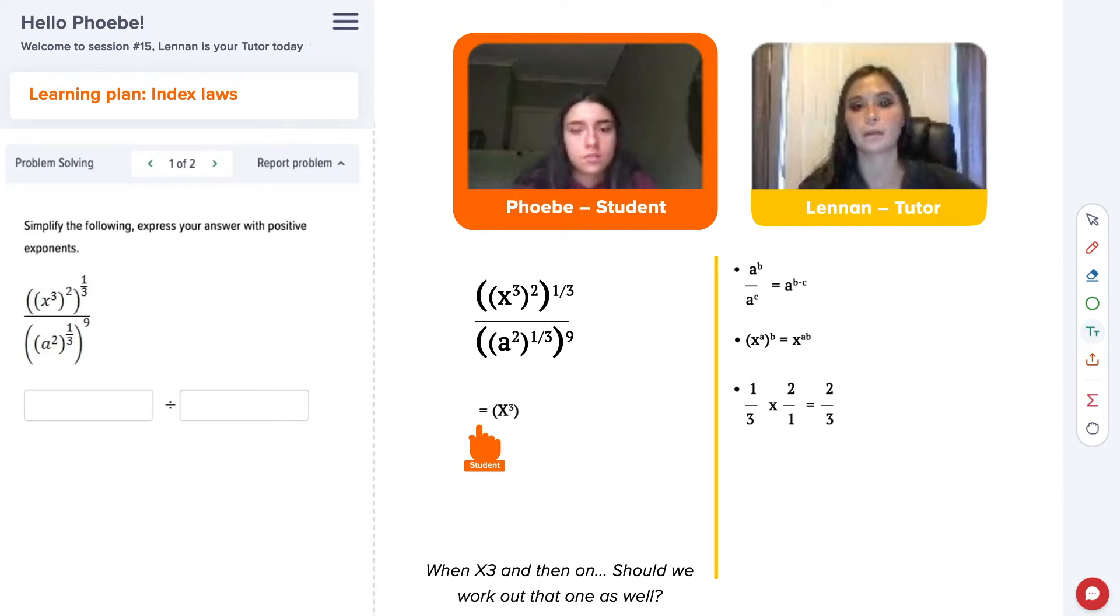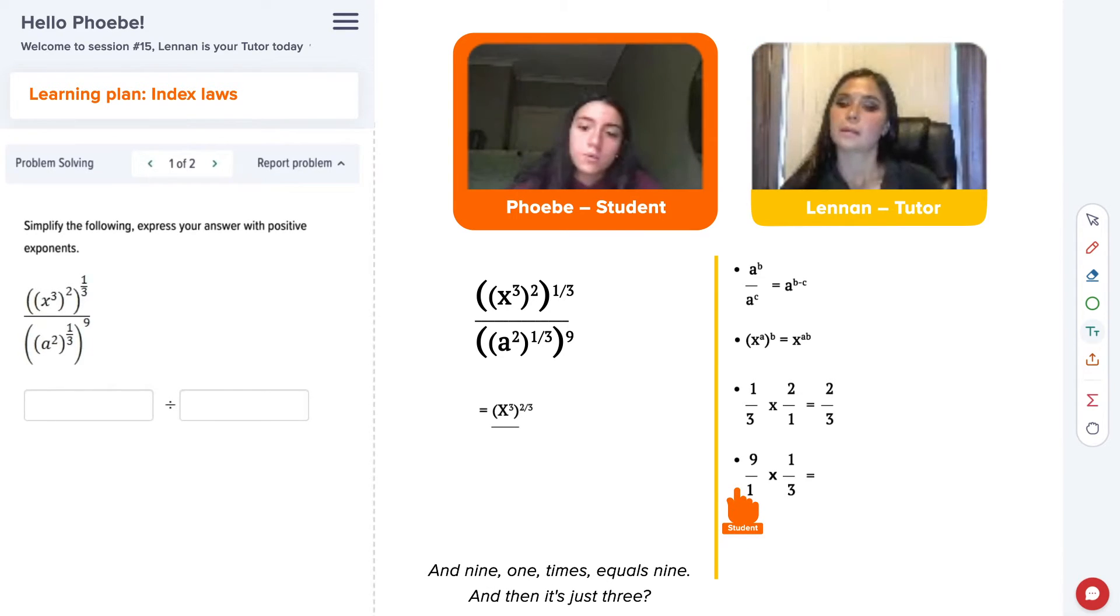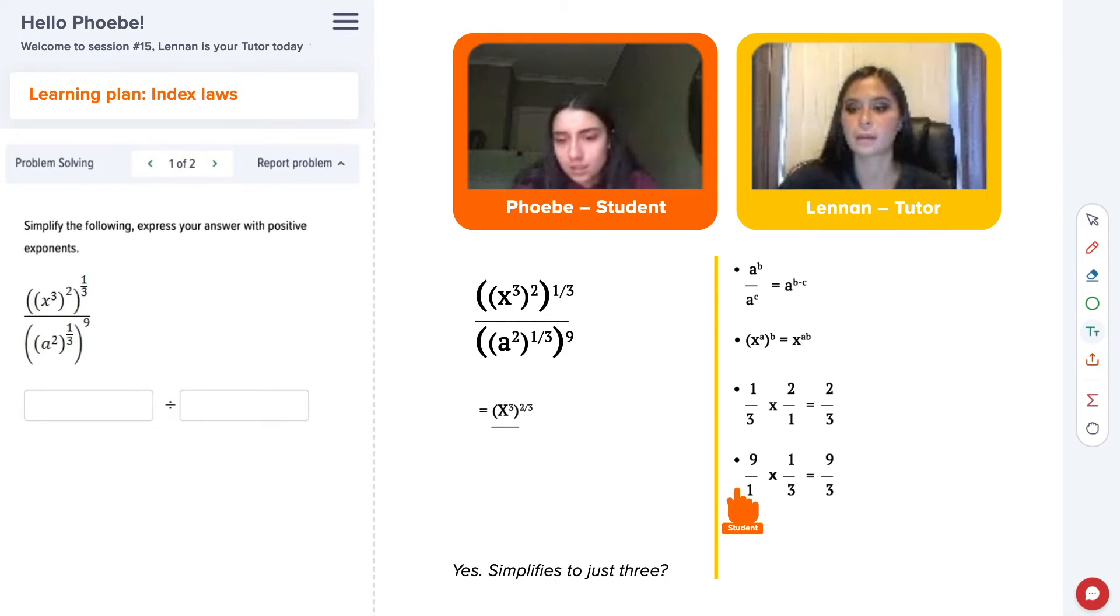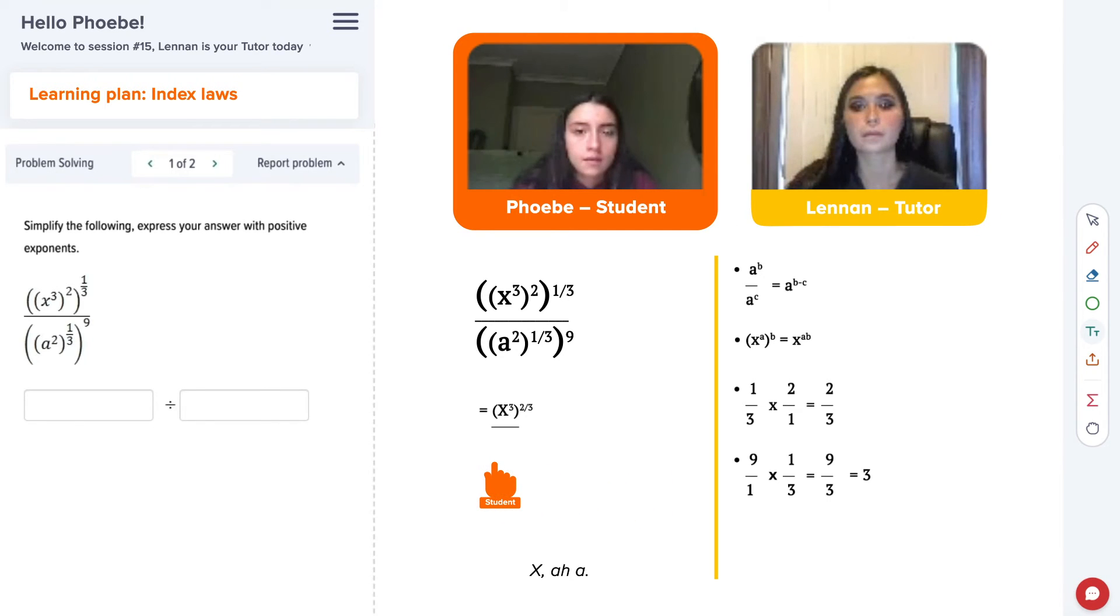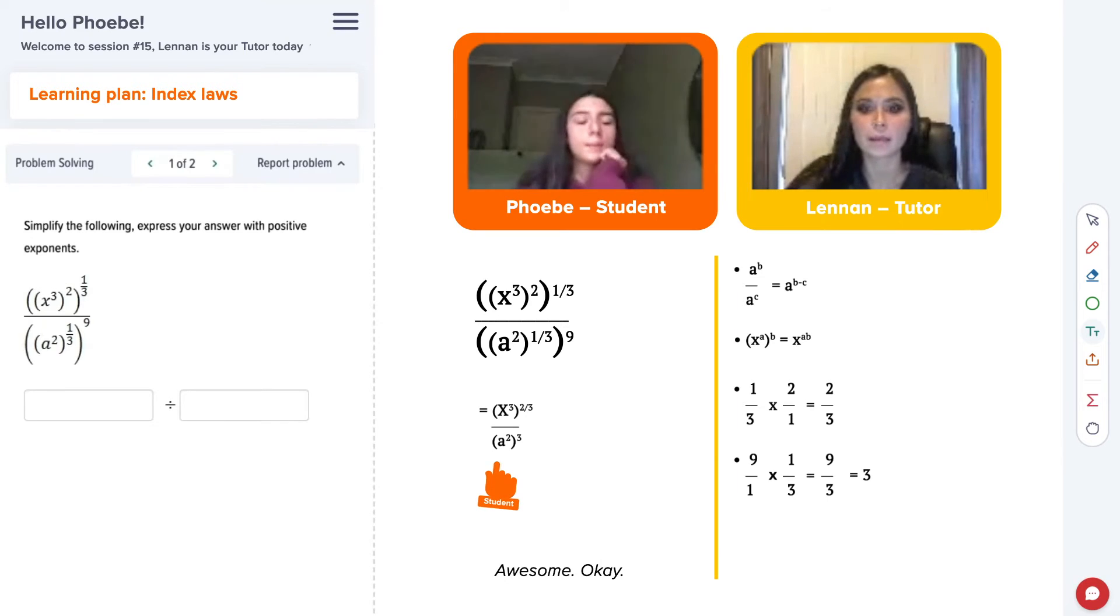Then X three and then on. Should we work out that one as well? Yeah, good idea. So nine one times equals nine. And then it's just three? Yes, it's nice to just three. It does. X or A. Yeah. Two power of three. Okay, awesome.